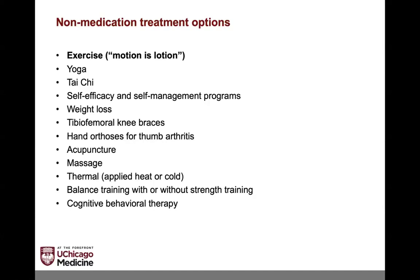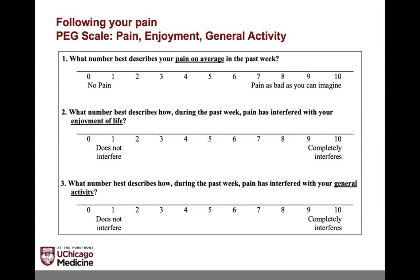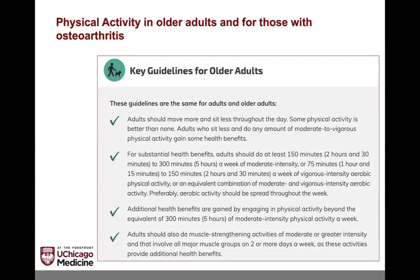Motion is lotion for the joints, particularly with osteoarthritis. Yoga and Tai Chi have really good data. Weight loss — even 5%, where applicable — can be helpful for pain and function. A tibial femoral knee brace for knee arthritis, a hand brace for thumb arthritis, acupuncture, massage, and cognitive behavioral therapy — working with a psychologist or psychiatrist to fill your coping toolbox — are all helpful. I assess treatment success by asking about pain, how it's interfering with enjoyment of life, and how it's interfering with daily activities.